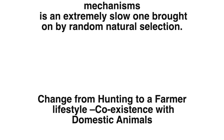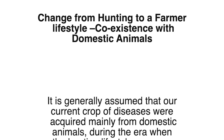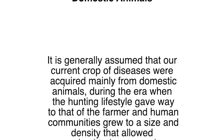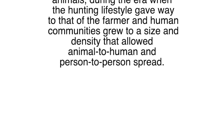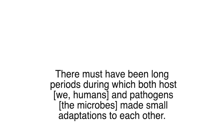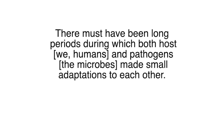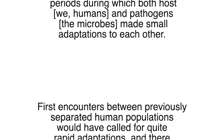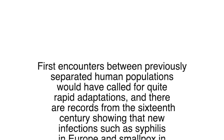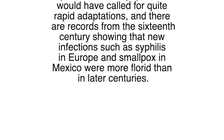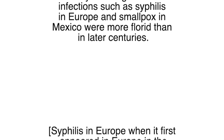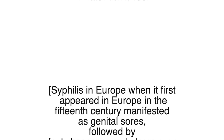It is generally assumed that our current crop of diseases were acquired mainly from domestic animals during the era when the hunting lifestyle gave way to that of the farmer, and human communities grew to a size and density that allowed animal-to-human and person-to-person spread. There must have been long periods during which both host — we humans — and pathogens made small adaptations to each other. First encounters between previously separated human populations would have called for quite rapid adaptations, and there are records from the 16th century showing that new infections such as syphilis in Europe and smallpox in Mexico were more severe than in later centuries.